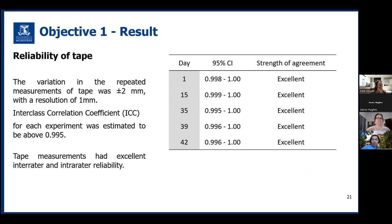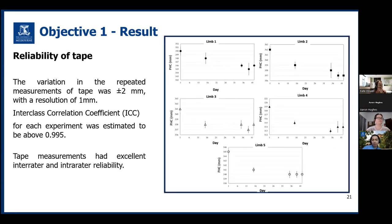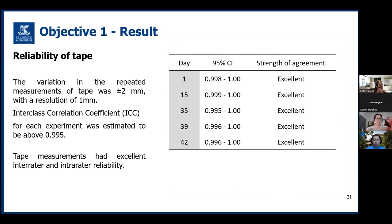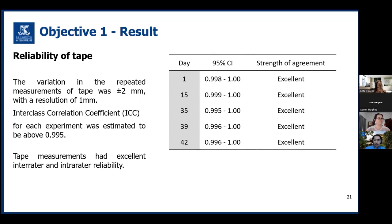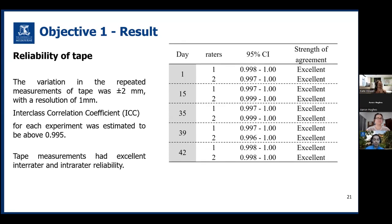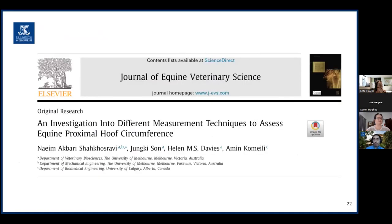These graphs show the result of five sets of PHC measurements taken by tape during a 42-day period. The variation in the repeated measurements of tape was up to plus or minus two millimeters with a resolution of one millimeter. This table provides ICC for inter-rater and intra-rater reliability analysis for tape measurements. ICC for each experiment was estimated to be above 99%, indicating excellent inter-rater and intra-rater reliability for tape. The output of this study was published in the Journal of Equine Veterinary Science.